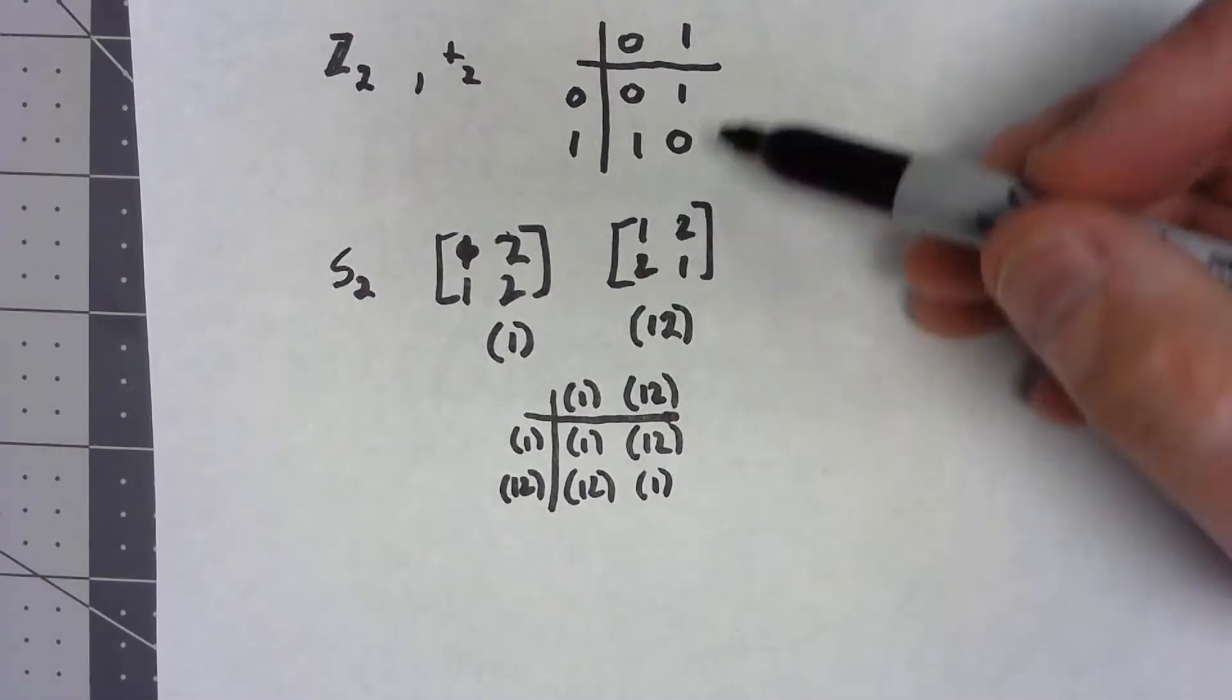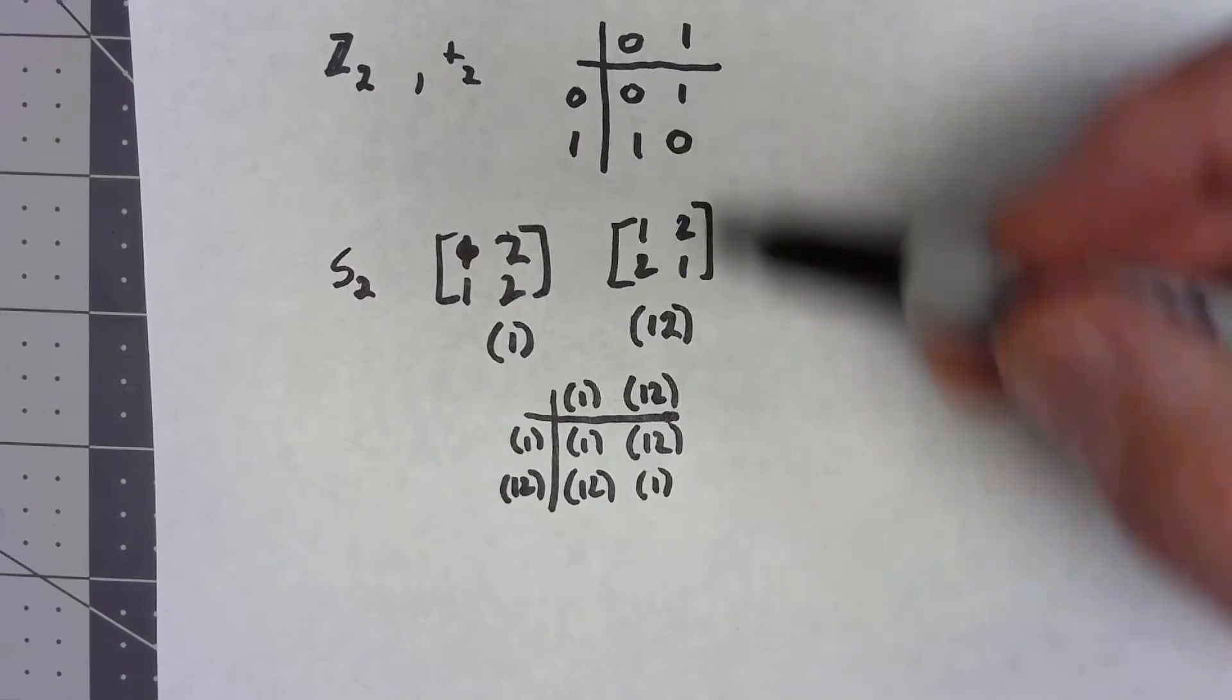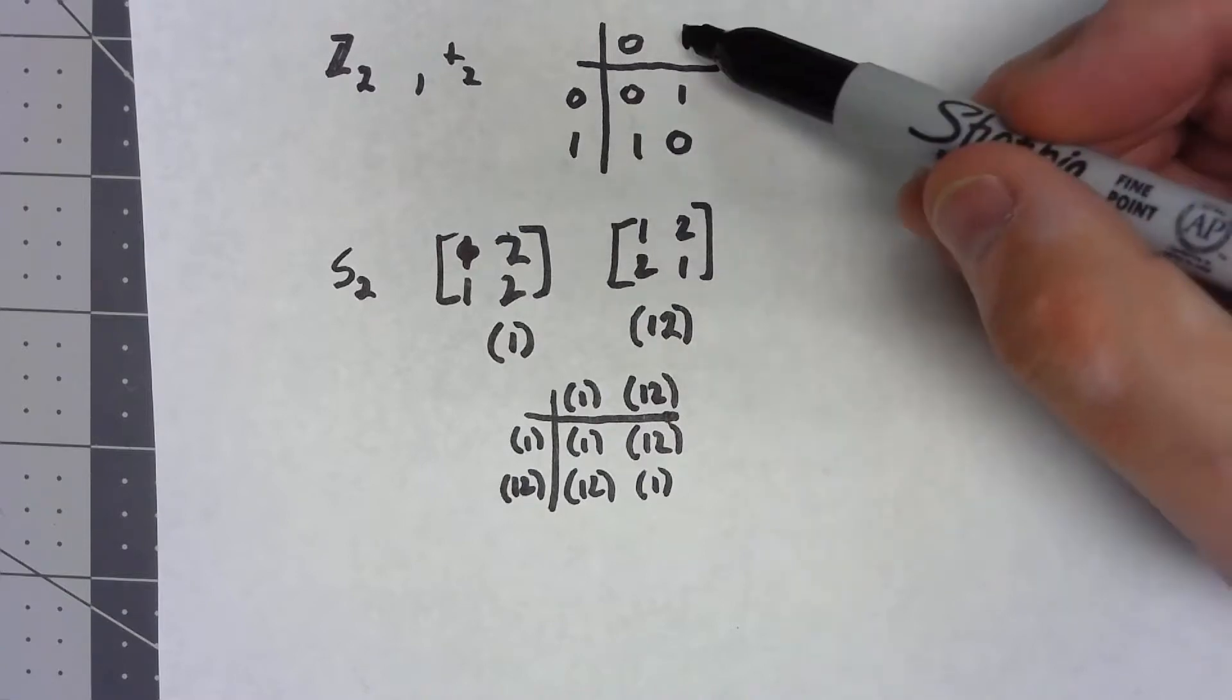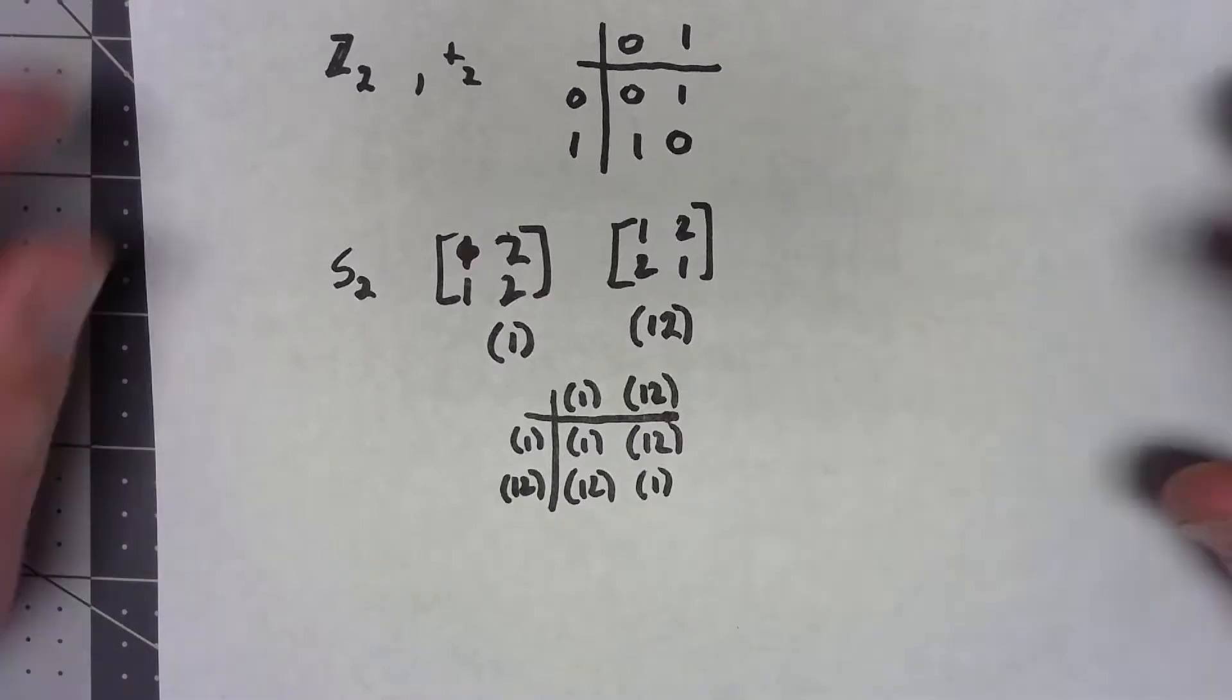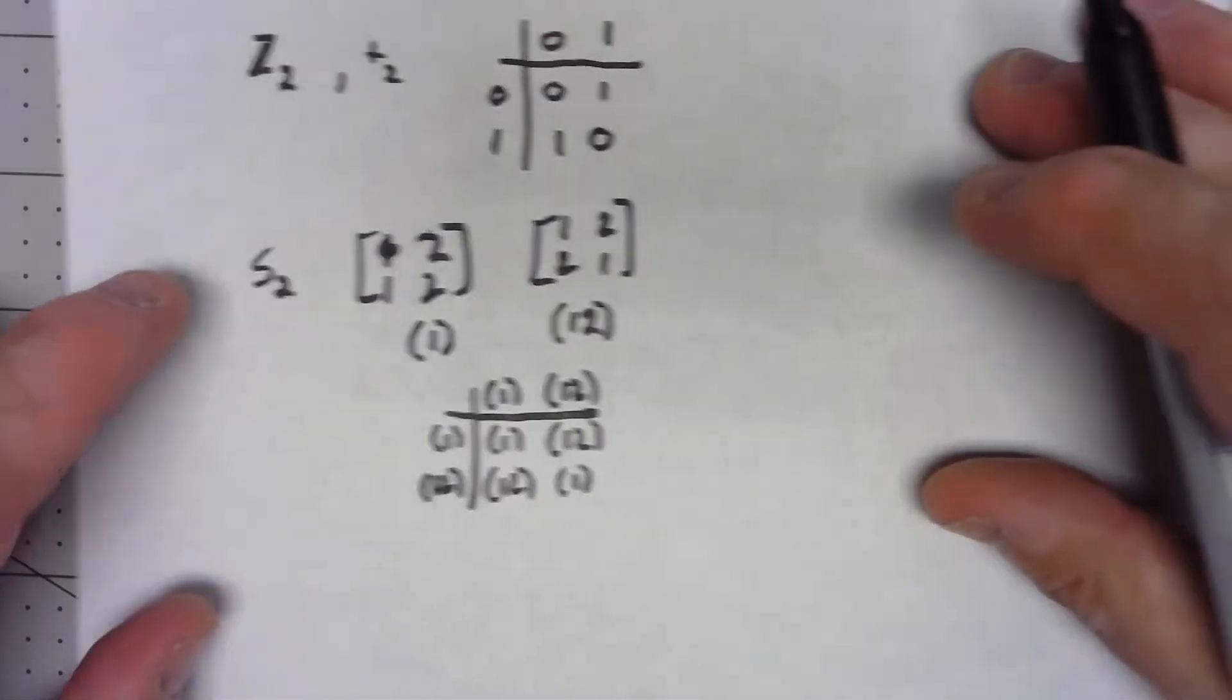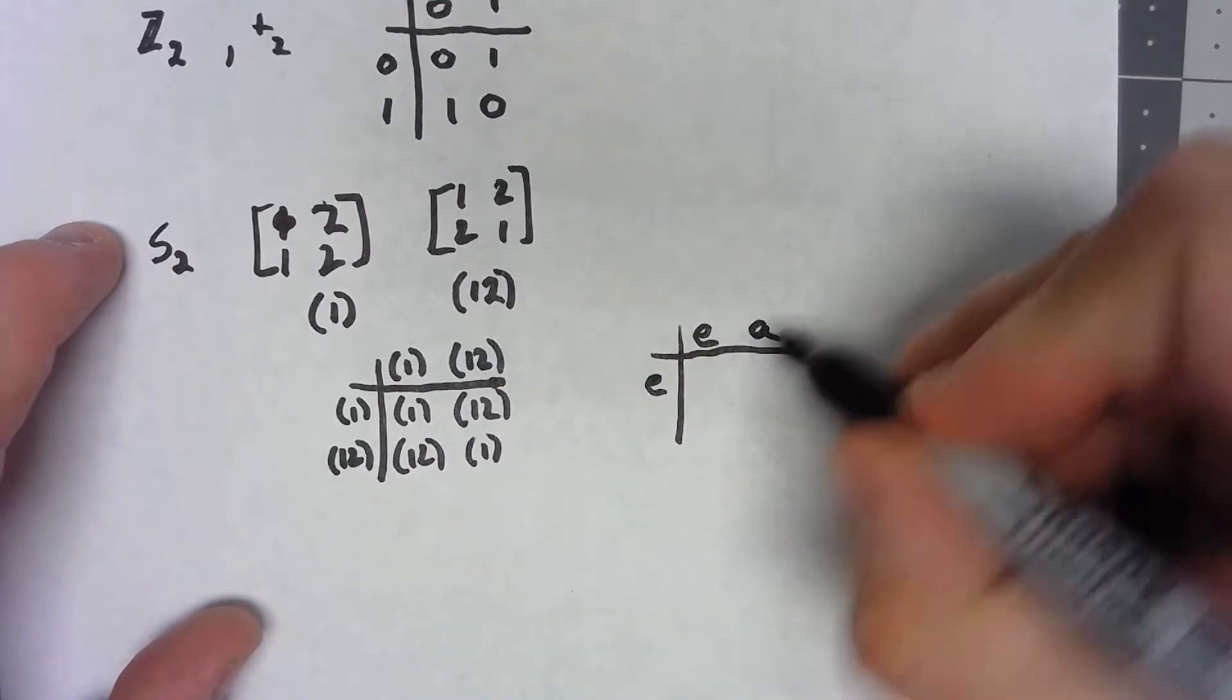If we think about it, these two things, even though we're thinking about them from a very different perspective of where they come from, they're effectively the same. They both have an identity, they both have one other element, and that other element is its own inverse. In fact, any group that we look at that only has two elements has to be effectively the same as this.